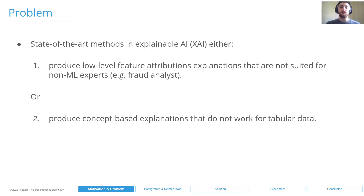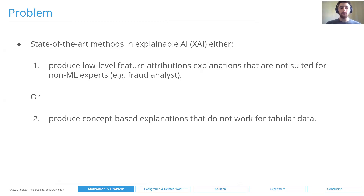However, the state-of-the-art methods in explainable AI either produce low-level feature attribution explanations that are not suited for non machine learning experts — for instance, fraud analysts who basically don't understand what those types of features mean — or methods produce concept-based explanations that could be useful for decision makers. However, those methods do not work with tabular data, which is one of the main domains in the machine learning field.